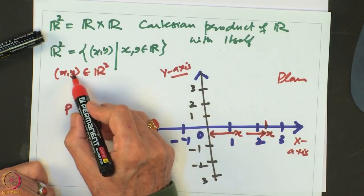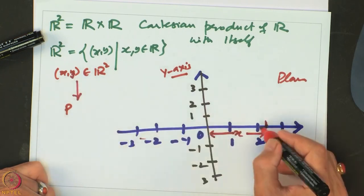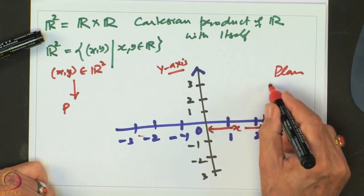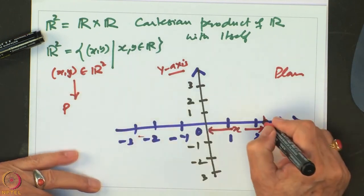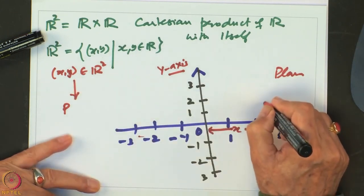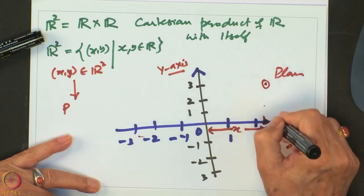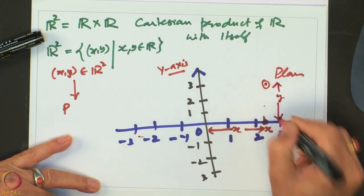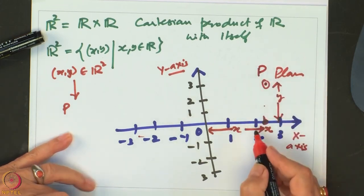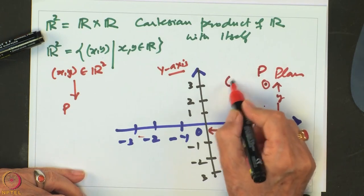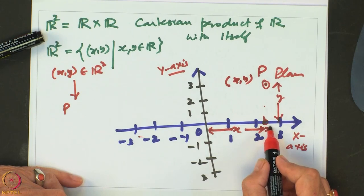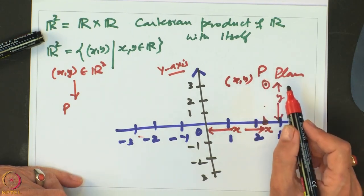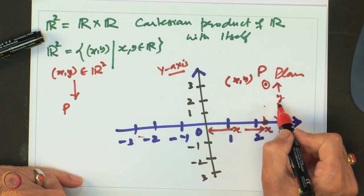For the Y component of the ordered pair, we look at whether Y is positive or negative. If positive, we go up; if negative, we go down that many units. So if Y is positive, we go up Y units and reach a point P. We say P has coordinates (X, Y).